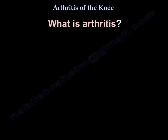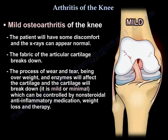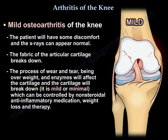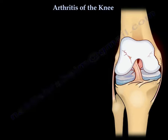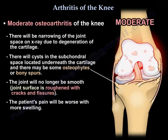In mild arthritis, the patient will have some discomfort and X-rays can appear normal. The fabric of the articular cartilage breaks down due to wear and tear, excess weight, and enzymes affecting the cartilage. Because the damage is mild or minimal, it can be controlled with non-steroidal anti-inflammatory medication, weight loss, and therapy.